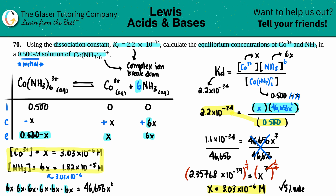We're basically going back to equilibrium and ICE tables — nothing really new here, just more intense math because now we see x to the seventh or x to the eighth. But other than that, it's essentially the same as the equilibrium chapter. Hopefully that helped — let me know in the comments, subscribe if you want to support the channel, and have a great day!